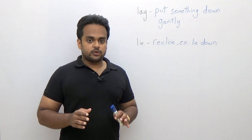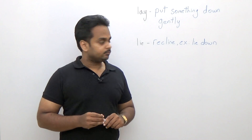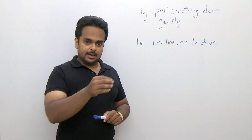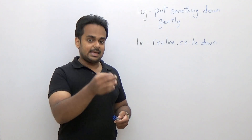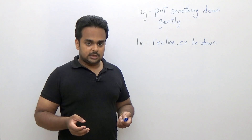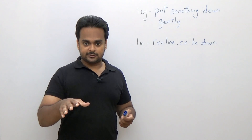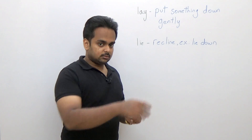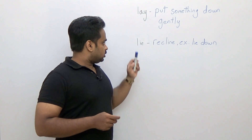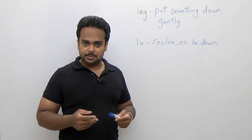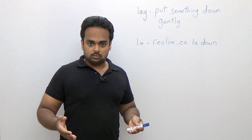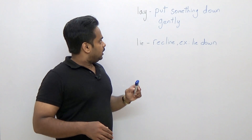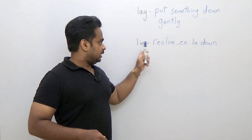To begin, let's make sure that we know what these two words actually mean. The word 'lay' means to put something down gently. So if I have a bunch of keys and I put them down on a table, I can say that I lay the keys on the table. Remember that 'lay' doesn't mean to throw or drop something. The word 'lie' means to recline — for example, to lie down, like when you go to sleep at night and you lie down on your bed.